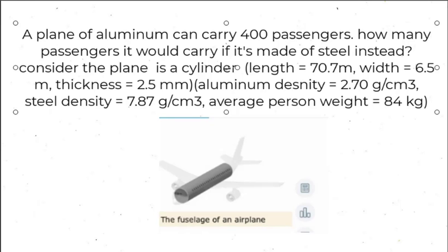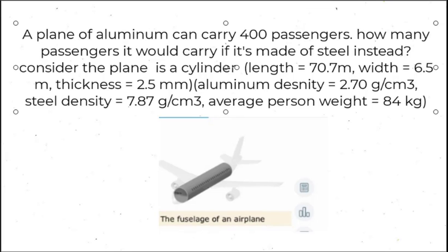Here is an applied density problem. A plane made of aluminum can carry 400 passengers. How many passengers would it carry if it's made out of steel instead? For simplicity, we'll consider the plane as a cylinder with the given parameters, and we'll also need the density of aluminum and steel, as well as the average weight of a person for our calculations.